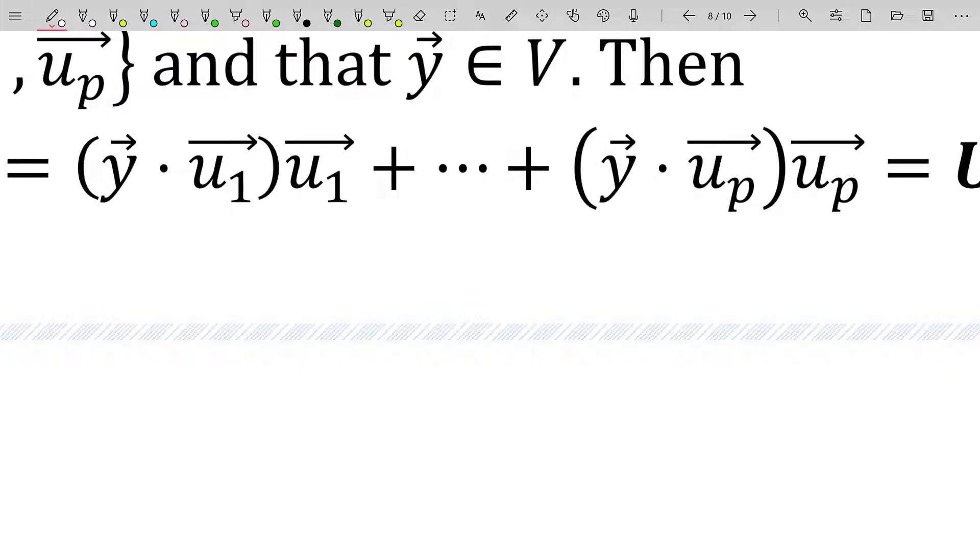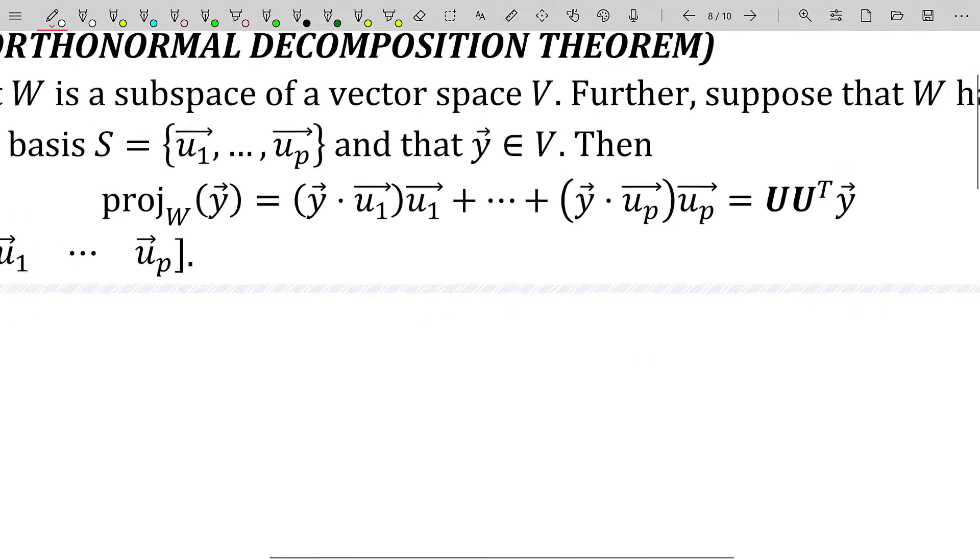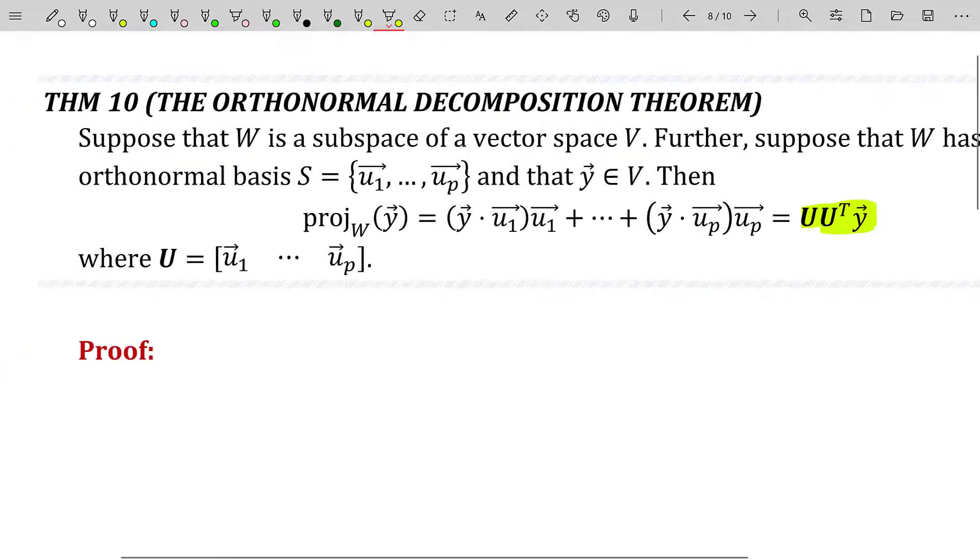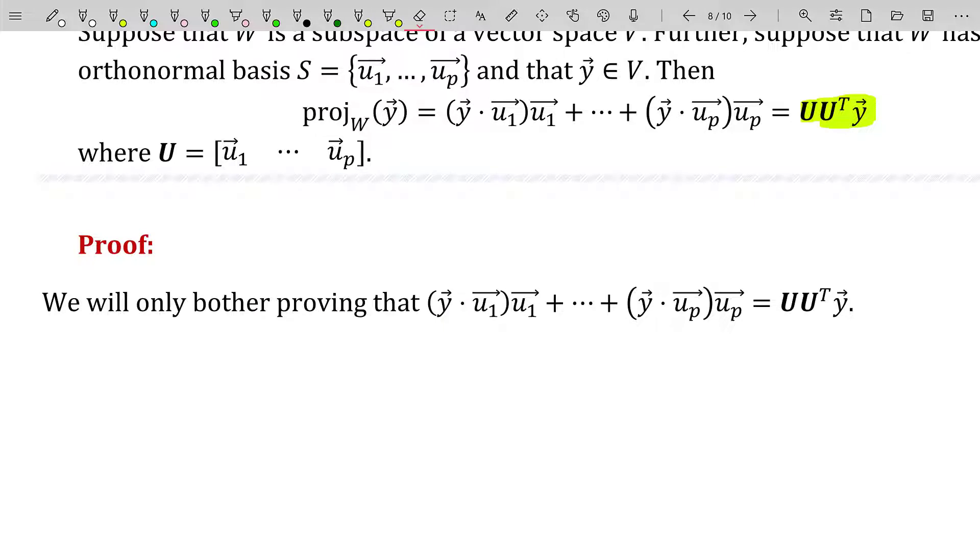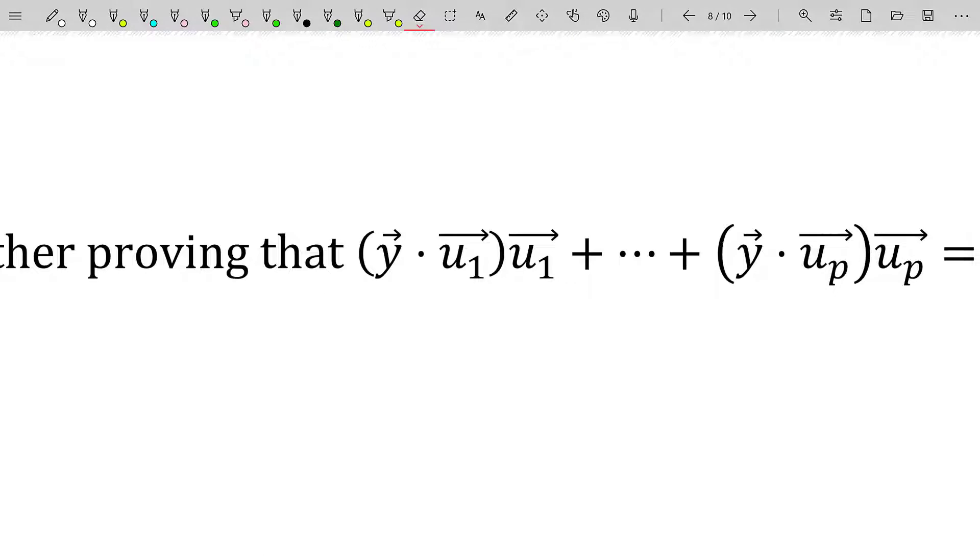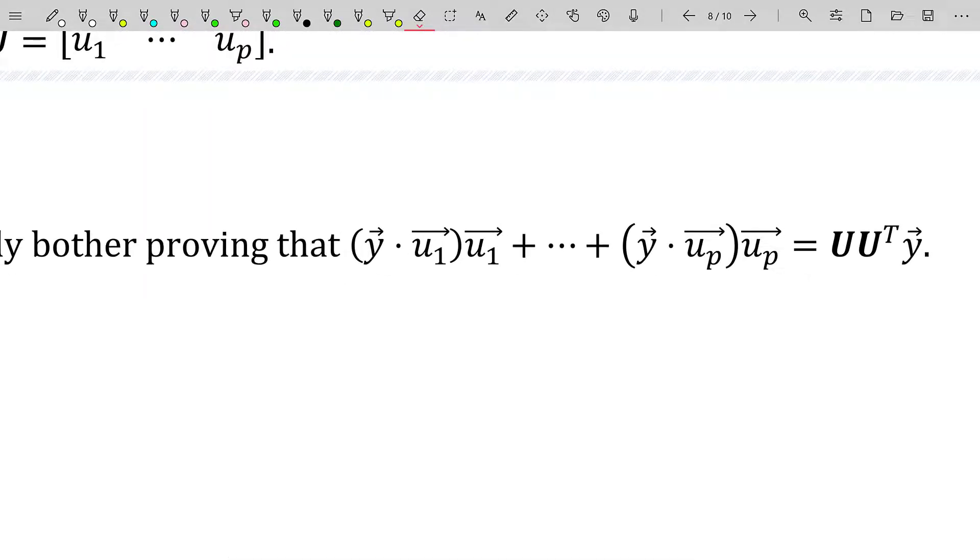And we had just stated very quickly that this was going to be the result, this linear combination of the orthonormal basis vectors. But the additional part in this theorem that is new to us is that this linear combination is going to be U times U transpose times y, where U is the matrix whose columns are the orthonormal basis vectors. Now, honestly, this is not too terrible to derive. And in fact, it's something that usually you could derive by yourself. But I'm going to go ahead and do it in this video because there's not a lot of material here. And it's just nice to see this.